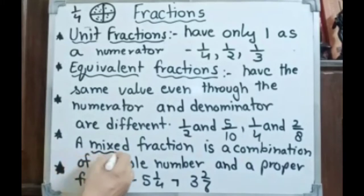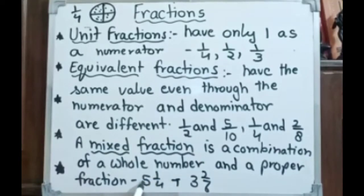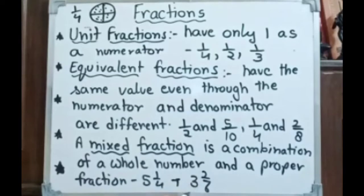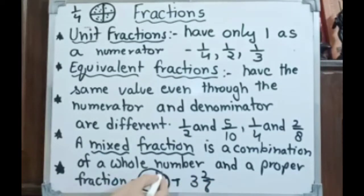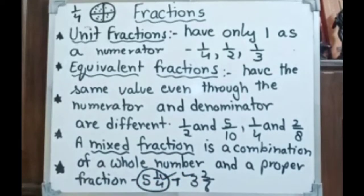A mixed fraction is a combination of a whole number and a proper fraction. For example, 5 whole number 1 by 4: we calculate 4 multiplied by 5 plus 1, giving 21 by 4. Another example: 6 whole number 2 by 3 — 6 times 3 is 18, plus 2 gives 20 by 6. So these are called mixed fractions.